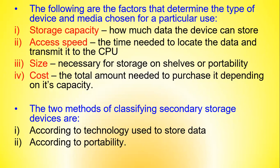There are various factors to consider when determining the type of device and media to use for storing data. These include: storage capacity — how much data the device can store; access speed — the time needed to locate data and transmit it to the CPU; size — necessary for storage on shelves and for portability; and cost — the total amount needed to purchase the storage medium depending on its capacity.